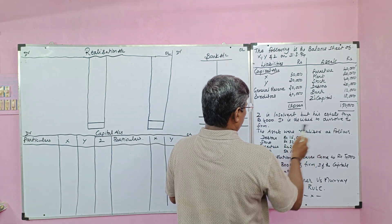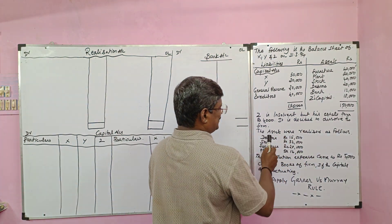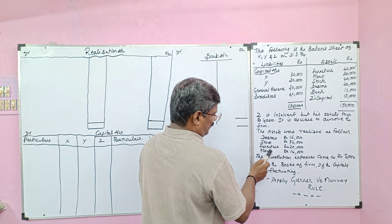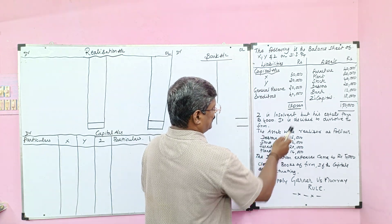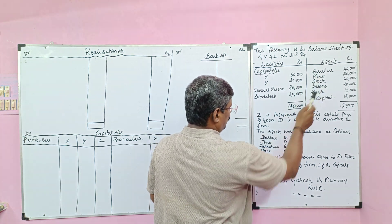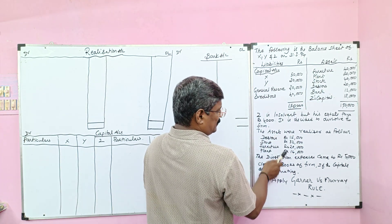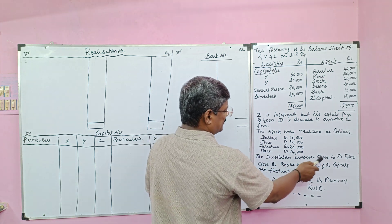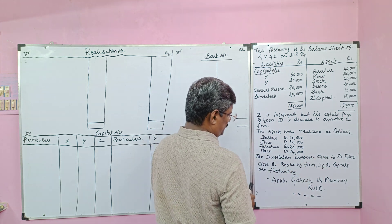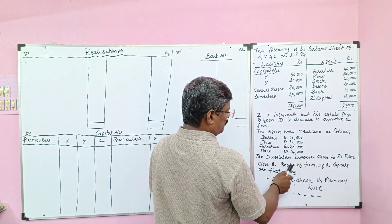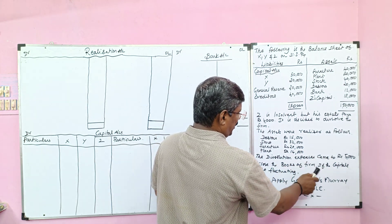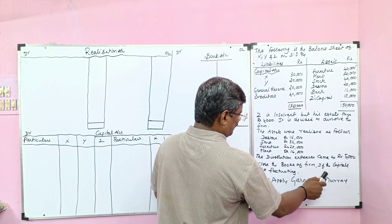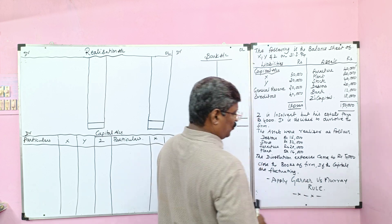It is decided to dissolve the firm. The assets were realized as follows: debtors, stock, furniture, and plant — these are all book values and these are all realized values. The dissolution expenses came to 5,000. Close the books of the firm. If the capitals are fluctuating, apply Garner vs. Murray rule. This is an English rule.